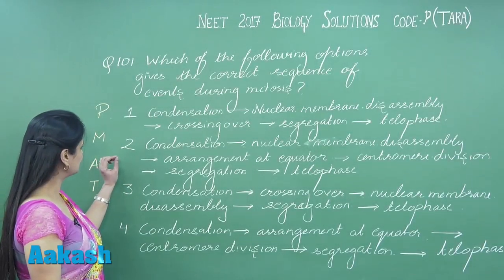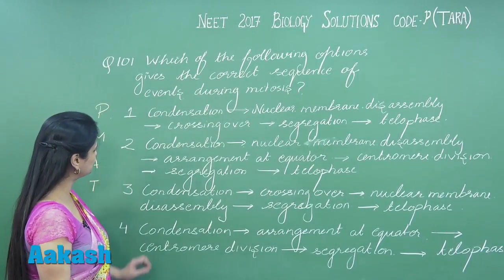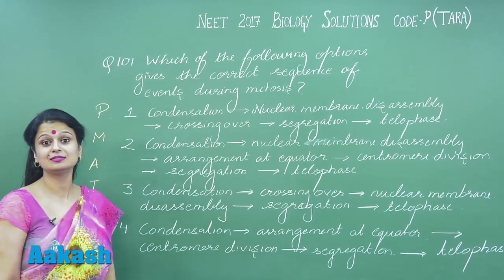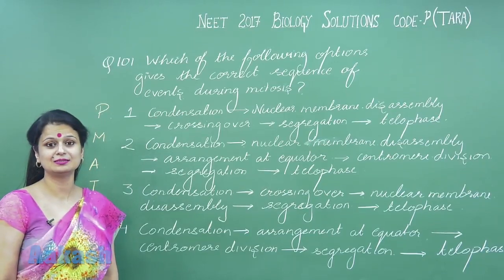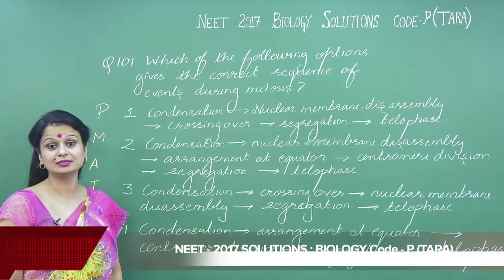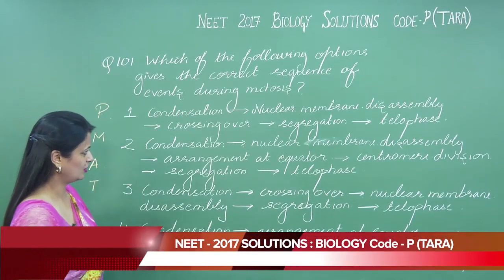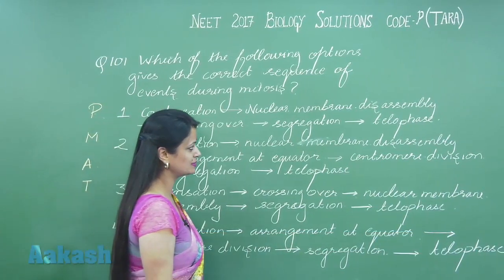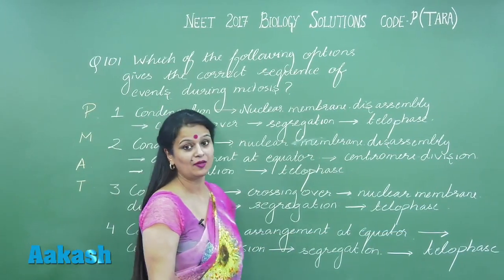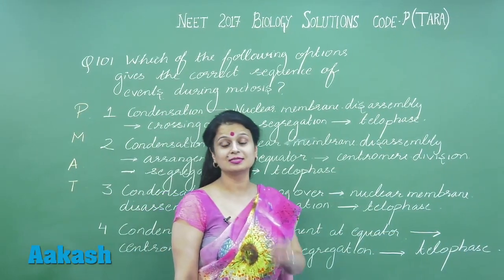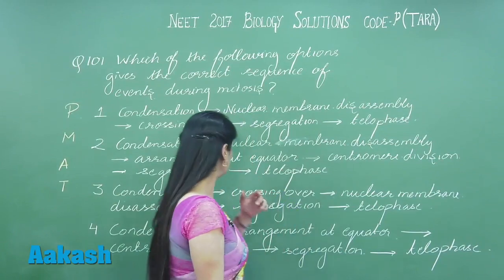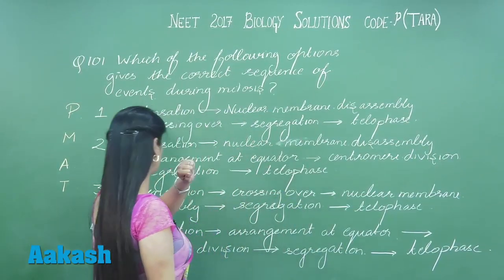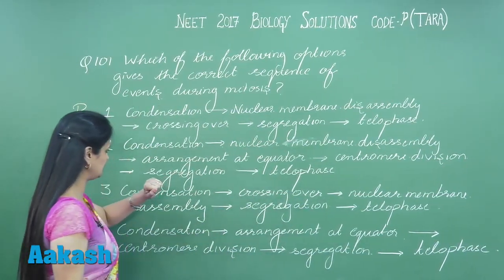Let's discuss option number two. Condensation begins at the early stages of prophase. The second event is nuclear membrane disassembly, which occurs at the late prophase. So these two events both belong to the prophase.